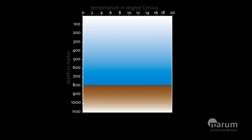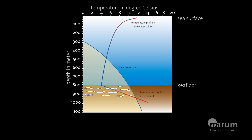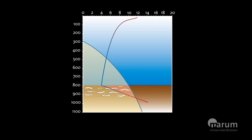In the ocean, pressure increases with depth. The phase boundaries shown in the diagram delineate the theoretical pressure and temperature limits under which methane hydrate should be stable. The water temperature in the ocean decreases with depth, in this case to about 4 degrees Celsius at the sea floor. Within the sediments, however, the temperature rises again due to the geothermal gradient. So methane hydrates can only form within the hydrate stability zone, which is delineated by the phase boundaries and the actual temperature distribution. But of course, methane also has to be present.